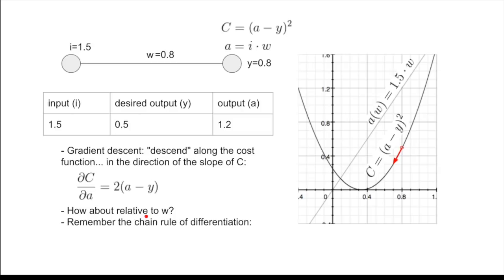However, the only thing we can change in the network is the weight, w. So, we need an expression for the rate of change of the cost function with respect to w. And for that, we need the chain rule of differentiation, which states that if there is a function of a function, the derivative of that function is the derivative of the inner function times the derivative of the outer function.